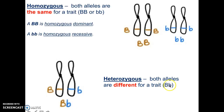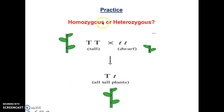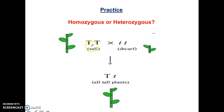Obviously, the phenotype of a heterozygous big B little b individual will be brown eye color, because the dominant allele is expressed. Make sure that you understand the difference between homozygous and heterozygous — the two homozygous individuals would have matching alleles, while the heterozygous individual has different alleles.